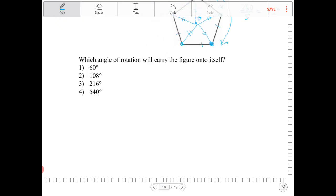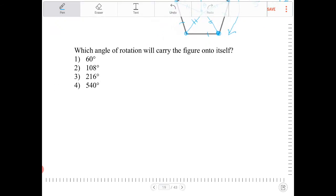So which options here will have multiples of 72? Well, 60 degrees is not a multiple of 72, nor is 108. 216, that is a multiple of 72, because 216 is 3 times 72. So yes, that's option 3.